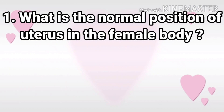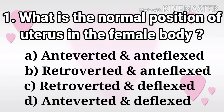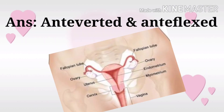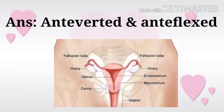Question 1: What is the normal position of uterus in the female body? The options are: anteverted and antiflexed, retroverted and antiflexed, retroverted and deflexed, anteverted and deflexed. The answer is anteverted and antiflexed.